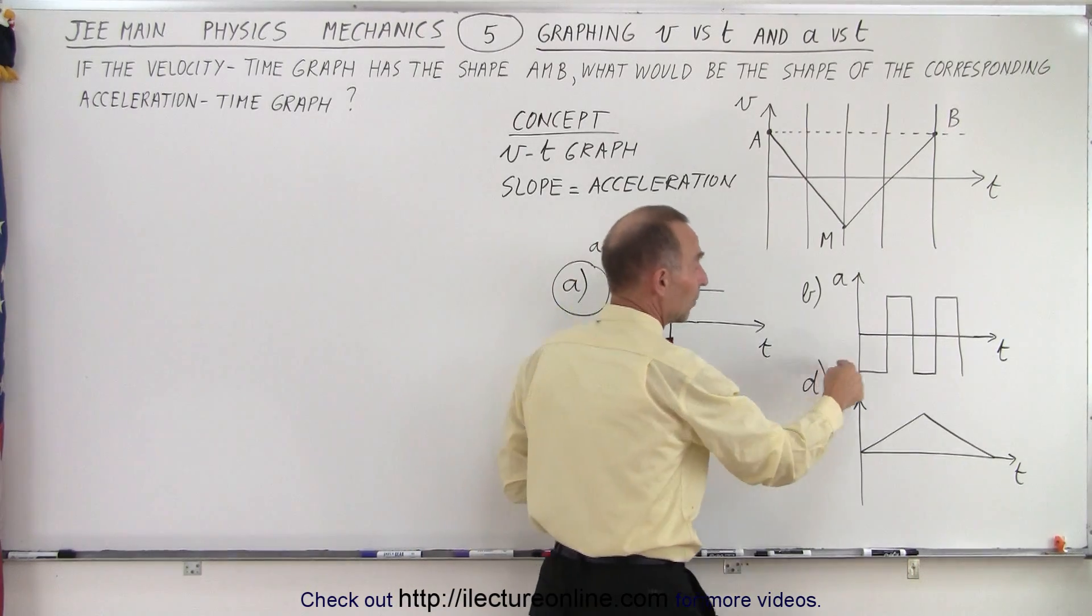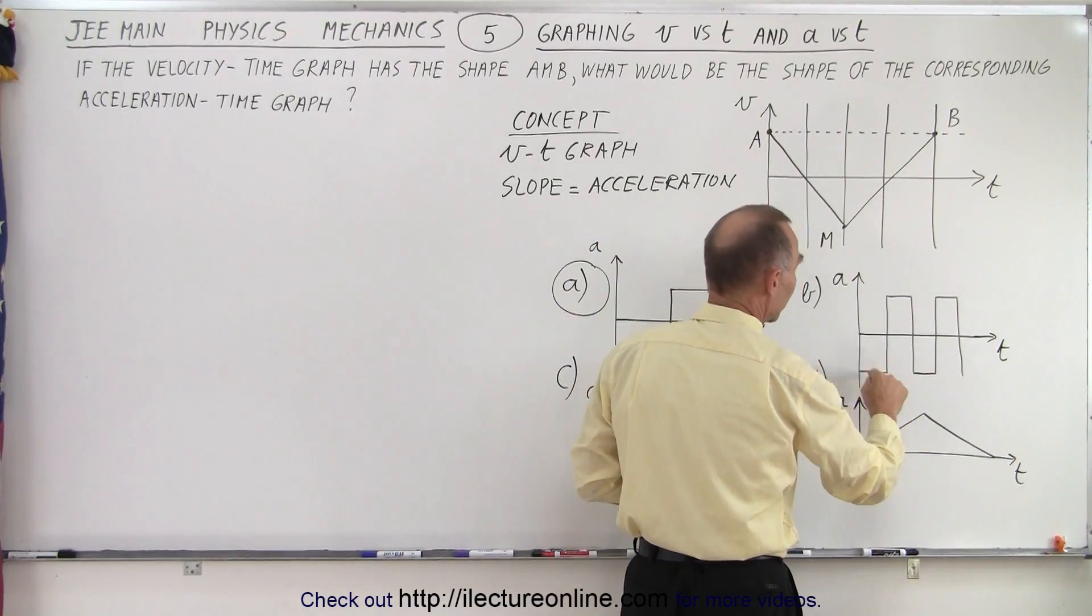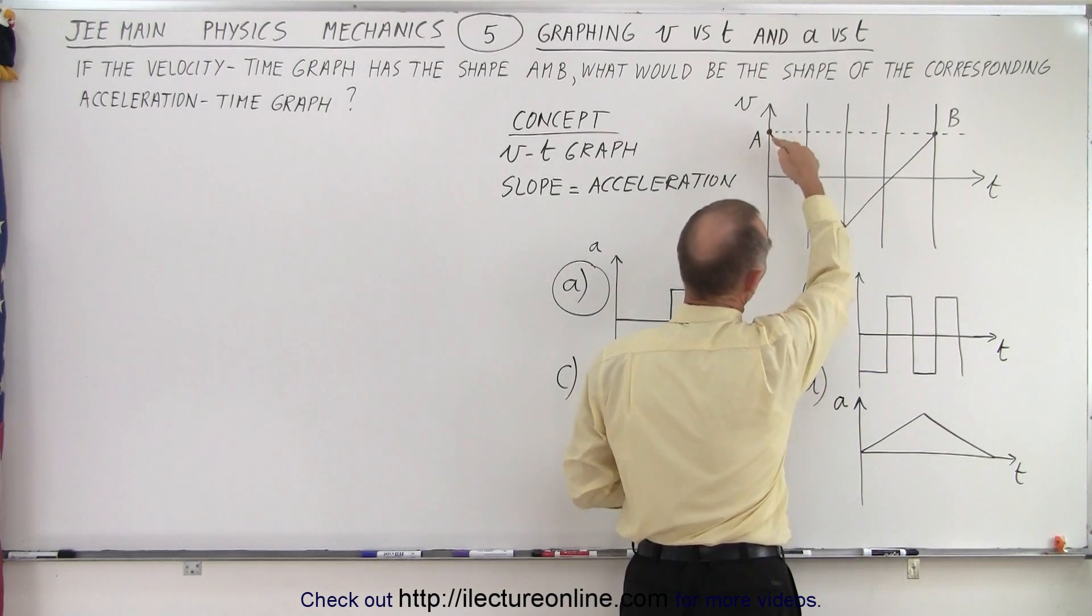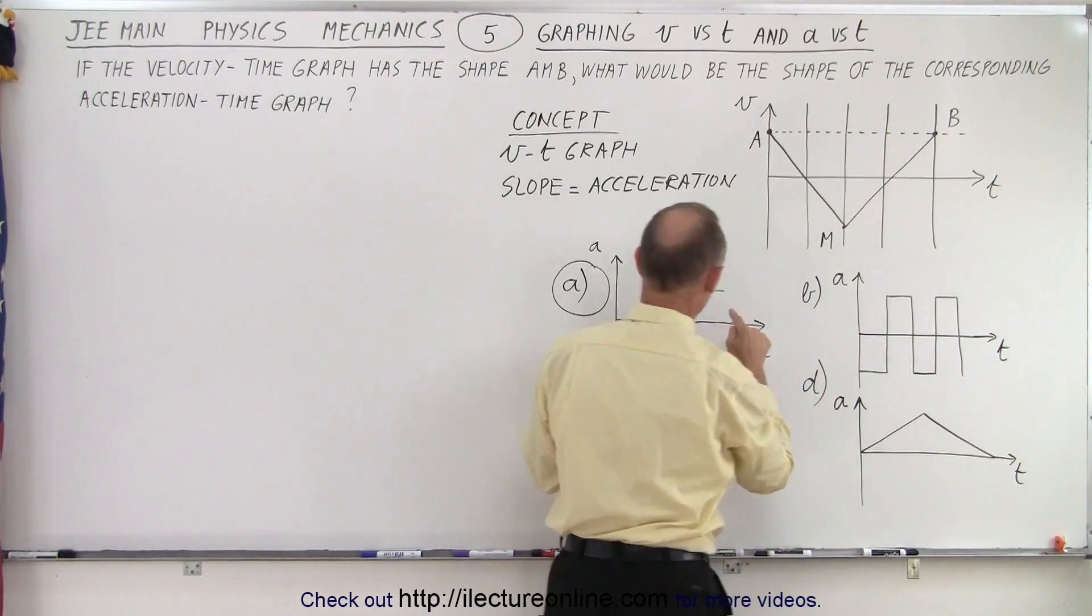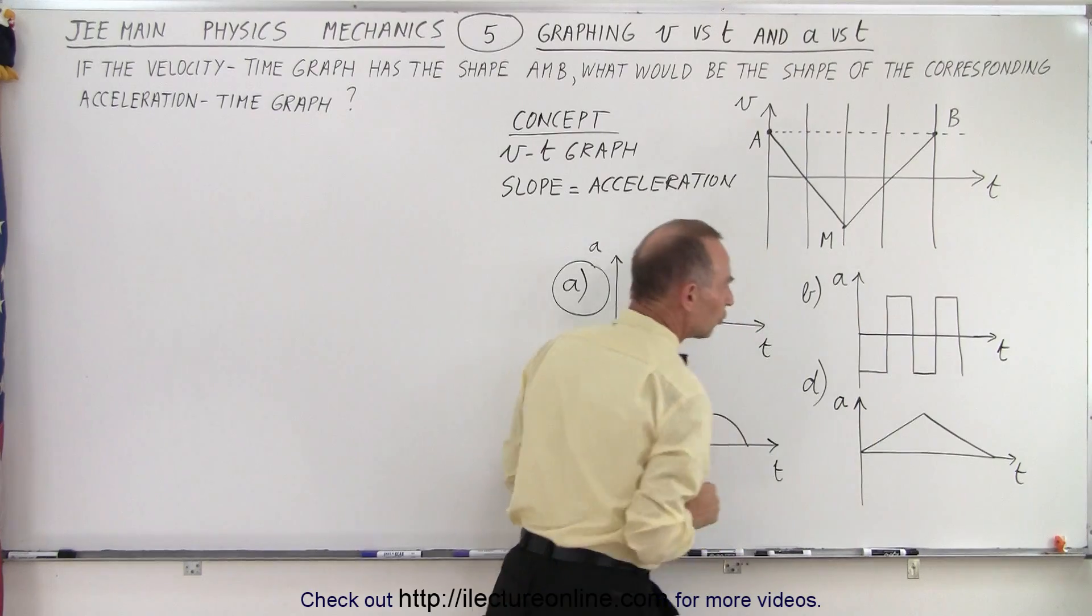Notice B doesn't make any sense because you're making all these changes—negative, positive, negative, positive—but you only have one negative slope and one positive slope. You should only have two of them, not a multitude of them.